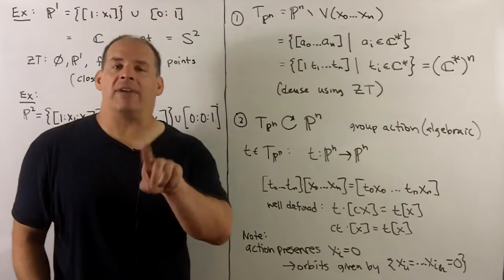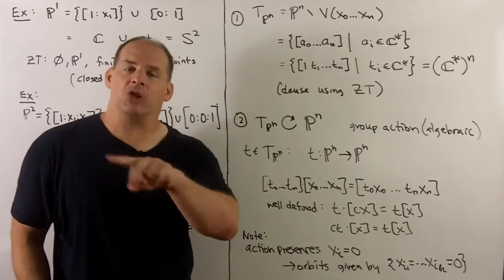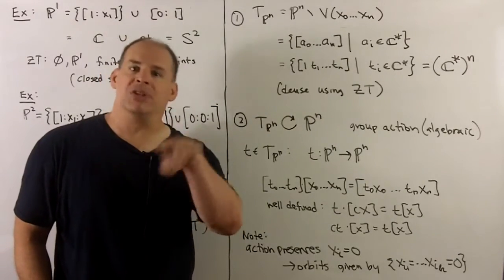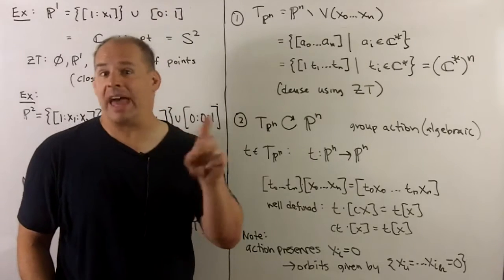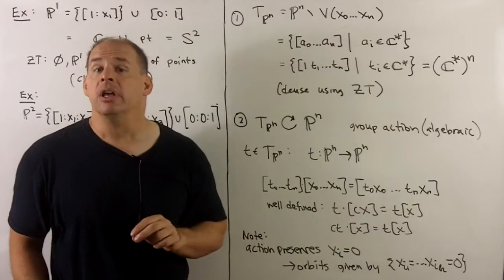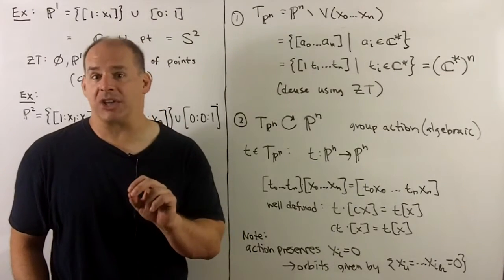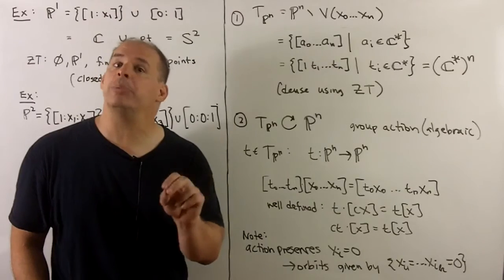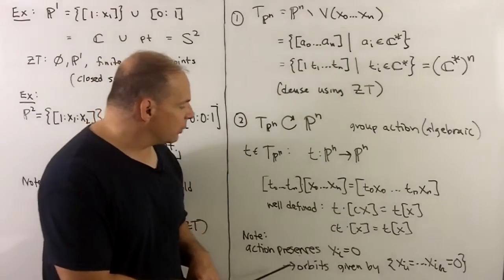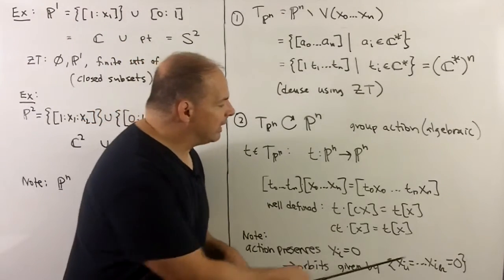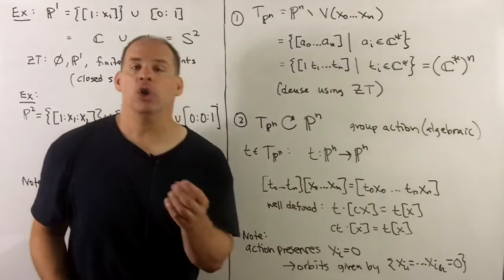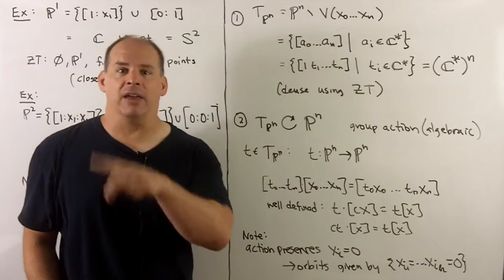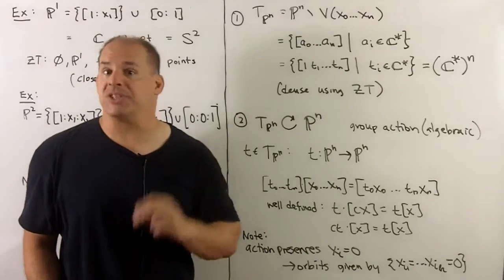If we have any entry equal to zero, this action is going to preserve the zero-ness of that entry, and that's how we get the orbits under this action. The orbits are given by: you pick a handful of coordinates to zero out, and that gives you an orbit itself.